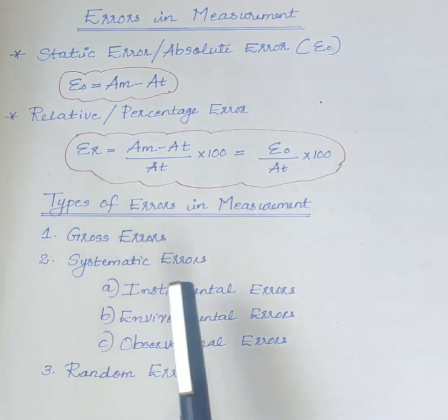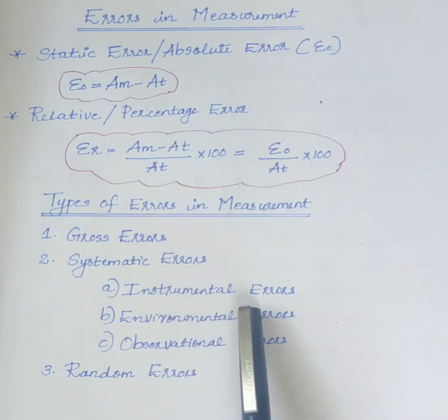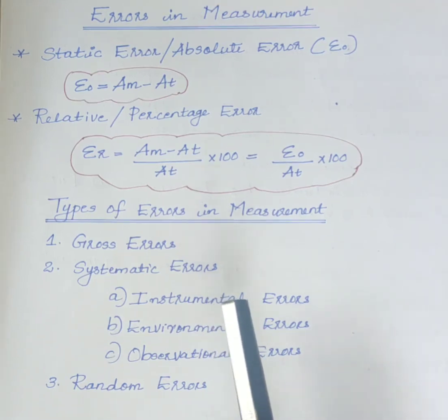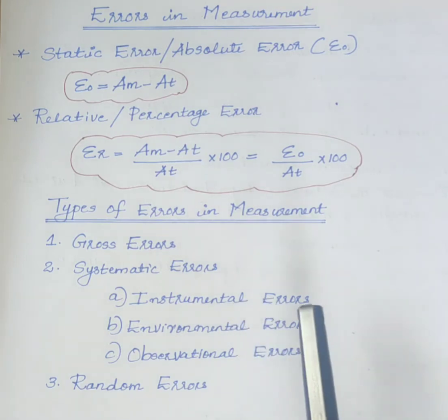Next one is systematic errors. First one is instrumental errors. Such errors are inherent in the measuring instruments because of their mechanical structure. Example, friction in bearings of various moving parts.